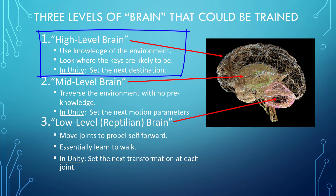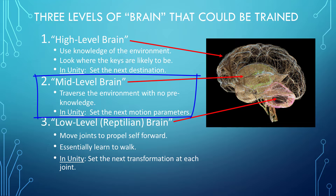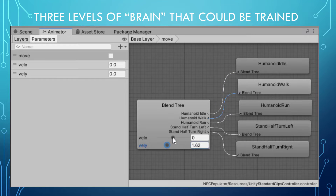In the high-level brain approach, we train the humanoid to use knowledge of the environment, either by having learned it already or by quickly assimilating what can be seen, heard, and detected by any senses. We want the humanoid to answer the high-level question of where the keys are likely to be. In Unity, working at the high-level brain may mean focusing on what our next destination to search should be. In the mid-level brain approach, we train the humanoid to move through the environment looking for the keys, without assuming any pre-knowledge of the environment. In Unity, we are focusing at the level of the animation motion parameters.